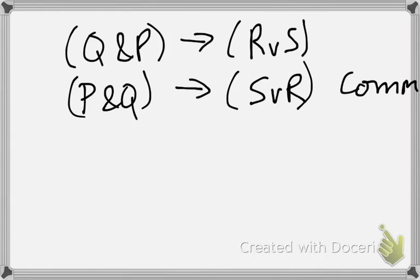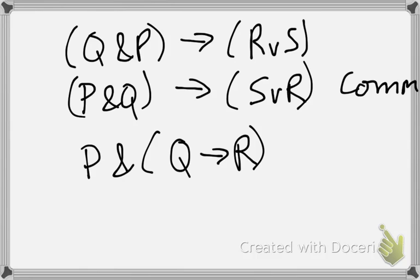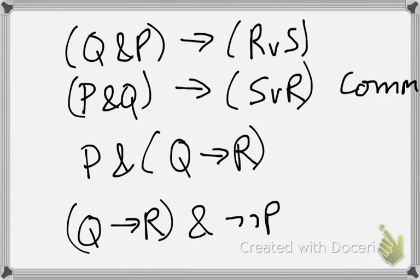One thing you can't do is, so we have a rule of double negation. Suppose I have the formula P and Q arrow R. And I want the formula Q arrow R and not not P. For some reason, well, I cannot do that in one step. Don't do that.